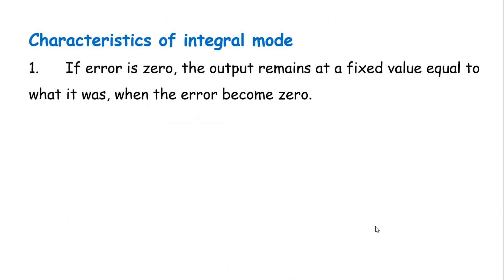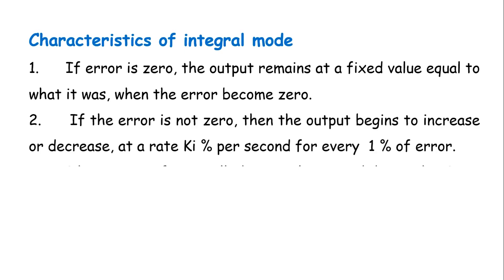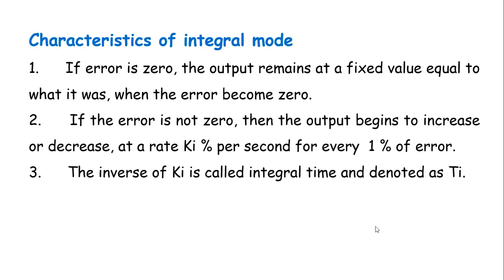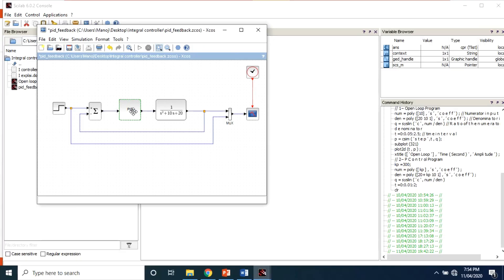Summarizing the characteristics of integral mode: first, if the error is zero, the output stays fixed at the value it was when the error went to zero. Second, if the error is not zero, the output will begin to increase or decrease at a rate of Ki percent per second for every 1% of error.